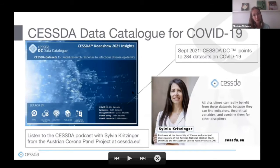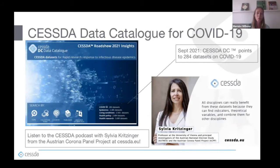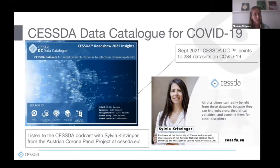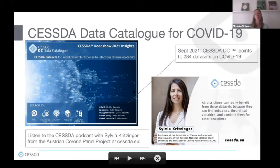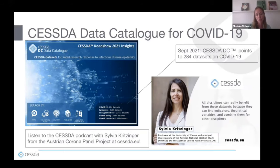To give you a brief insight into the CESSDA data catalog: it's a catalog for researchers to discover real treasures of datasets, with over 30,000 datasets already available. To give you a small example, in September 2021 the CESSDA data catalog counted 284 datasets specifically on COVID-19.